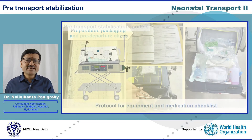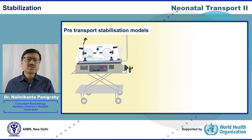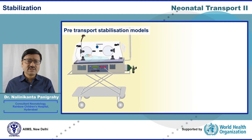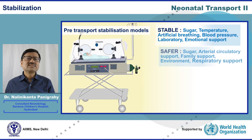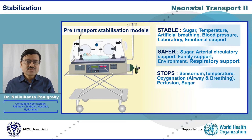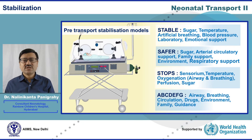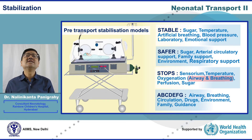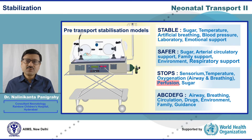For pre-transport stabilization, several popular protocols are available: STABLE, SAFER, and STOPS. STOPS stands for Sensorium, Temperature, Oxygenation — which includes airway and breathing — and Perfusion and Sugar. Another protocol is ABCDEFG: A for Airway, B for Breathing, C for Circulation, D for Drugs, E for Environment and surrounding, F for Family, and G for Guidance — the emotional guidance to the family.